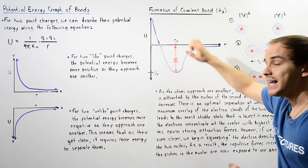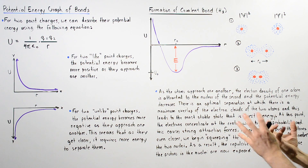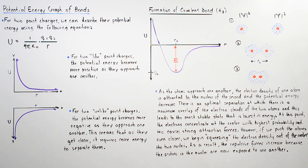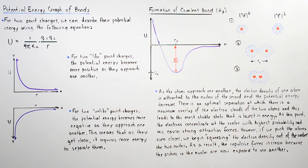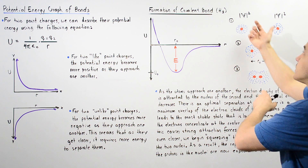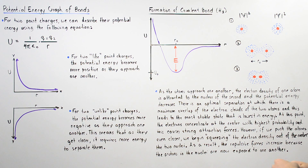At this point, there is maximum overlap between the two electron clouds of the two individual atoms, and at this point our diatomic H₂ molecule is actually formed.